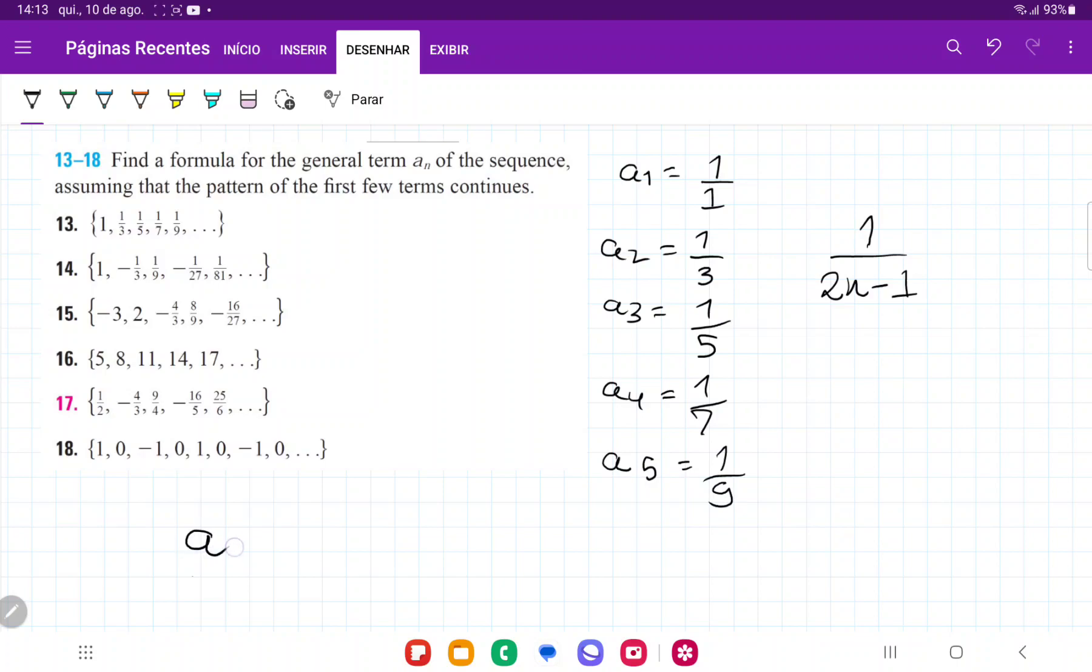So generally speaking, an is going to be 1 over 2n minus 1, where we just plug in the natural numbers for n, and it's going to give us the nth term of our sequence. And so that is it.